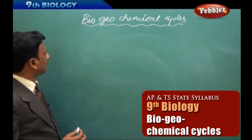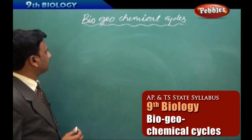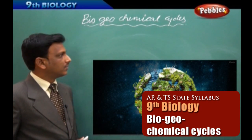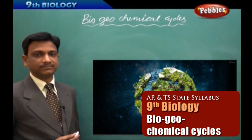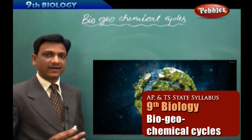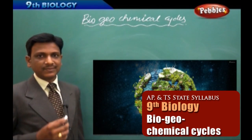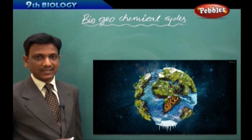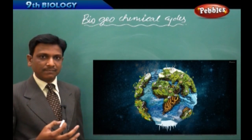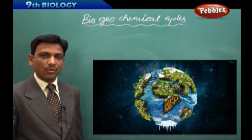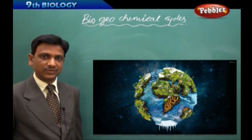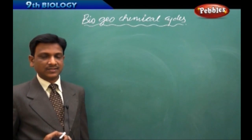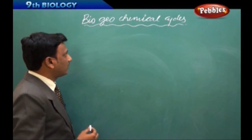We are now in the last chapter: biogeochemical cycles. We learned about ecosystems and how environmental pollution disturbs an ecosystem. If we understand biogeochemical cycles, we can understand the basic root causes of how environmental pollution affects the ecosystem.